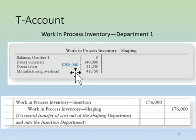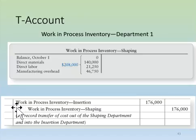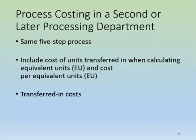The units completed and transferred out totaled $176,000. The company uses this information to make the journal entry: we credit work in process inventory — shaping, taking those costs out of shaping and moving them into work in process inventory — insertion, which is the next step. We continue repeating this through multiple departments using the five-step process costing procedure.